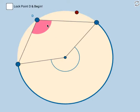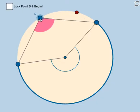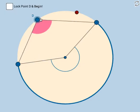So with this applet here, you see a circle, of course. And you see a pink angle right here with vertex D. And you'll notice that this vertex D always lies on the circle itself.